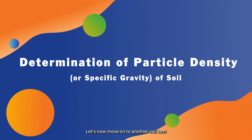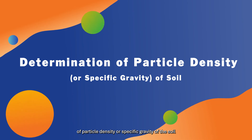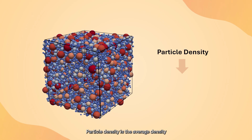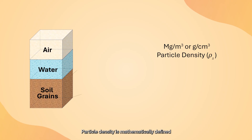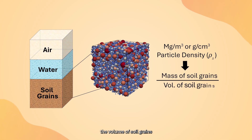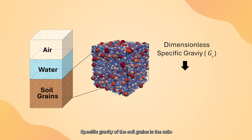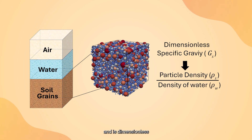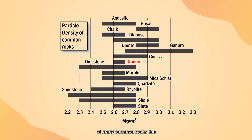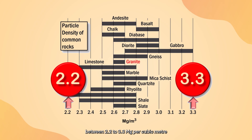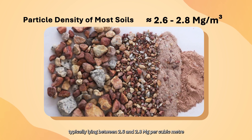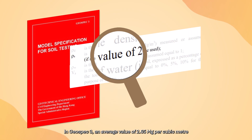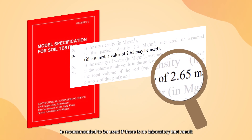Let's now move on to another soil test: the determination of particle density, or specific gravity, of a soil. Particle density is the average density of soil grains, mathematically defined as the ratio of the mass of soil grains to the volume of soil grains, with a unit of megagram per cubic meter or gram per cubic centimeter. Specific gravity is the ratio of the particle density to the density of water, and is dimensionless. The average particle density of most soils typically lies between 2.6 and 2.8 Mg/m³. In GeoSpec 3, an average value of 2.65 Mg/m³ is recommended if no laboratory test result is available.